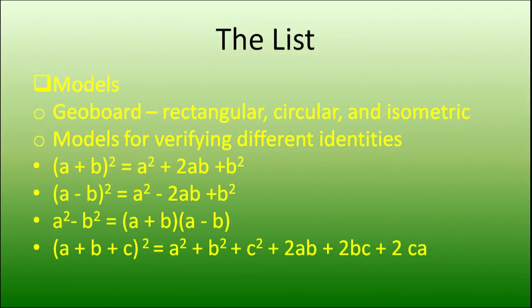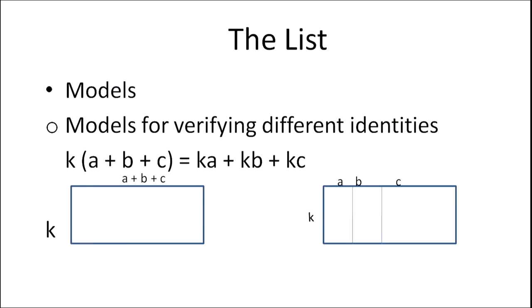We can have a model for (a+b+c)², a model for a² − b², and a model for k(a+b+c) = ka + kb + kc.